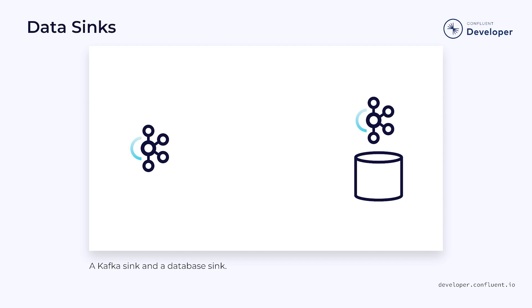Data streams also have a sink. However, in this case, the purpose of the sink is to store our data. We might consume the data and dump it into a database, or we might push it to a Kafka topic. Whatever we decide to do with it, this is the endpoint of our stream.